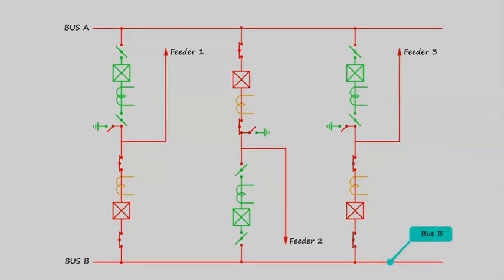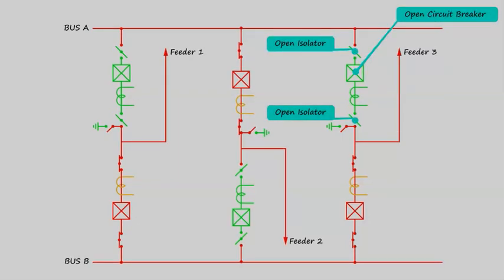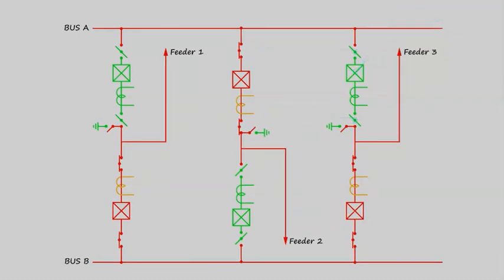At the same time you see the isolators and the circuit breaker associated with feeder 3 towards bus A are in open position. So feeder 3 is now not connected with bus A. This is the philosophy of double breaker system.